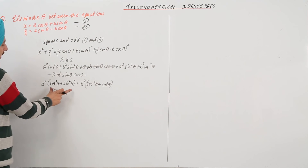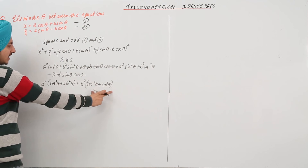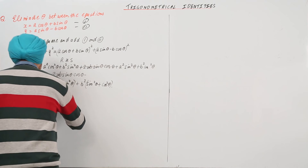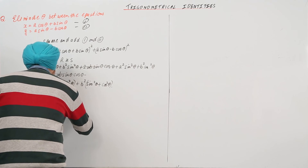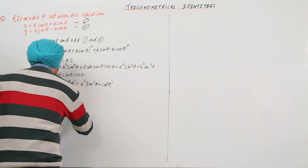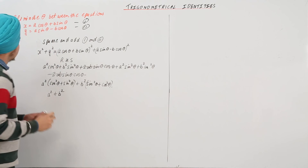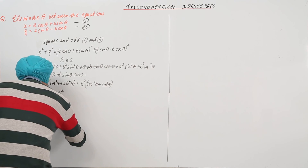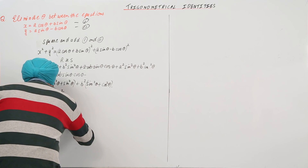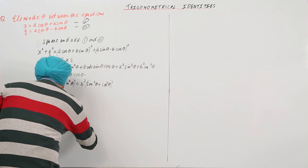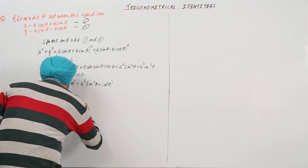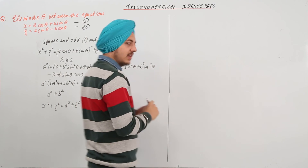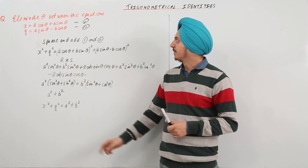This value is 1 and this value is also equal to 1, so this gives a square plus b square. We have x square plus y square is equal to a square plus b square — the required elimination.